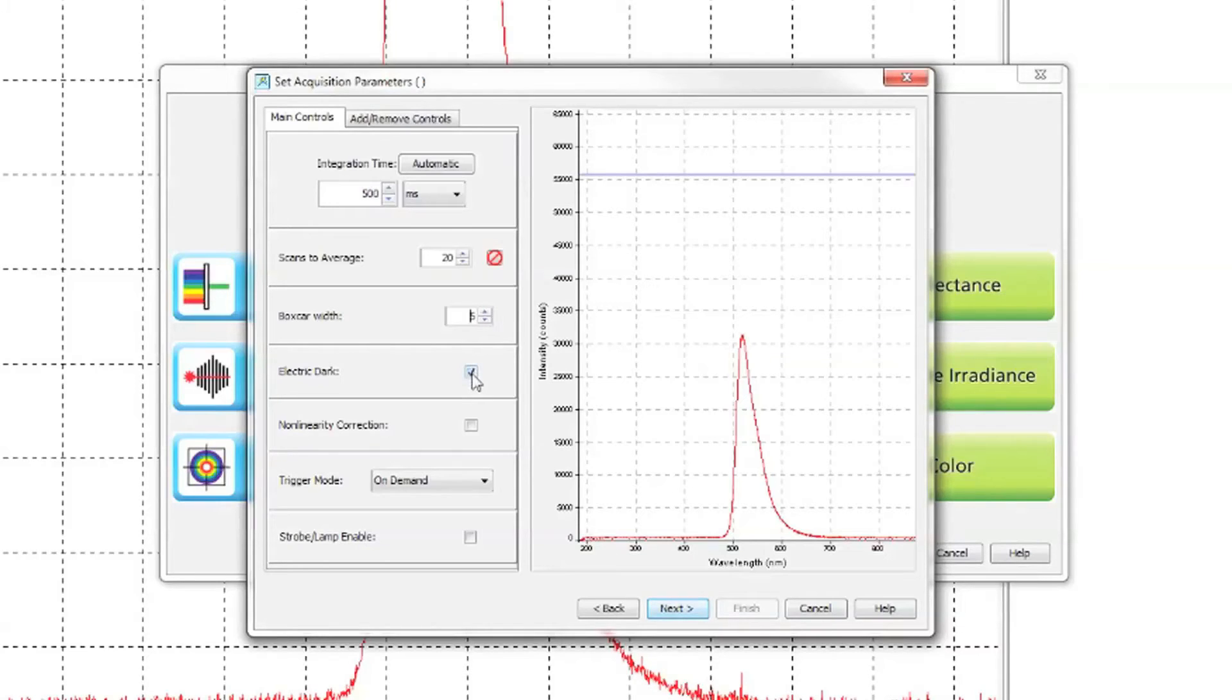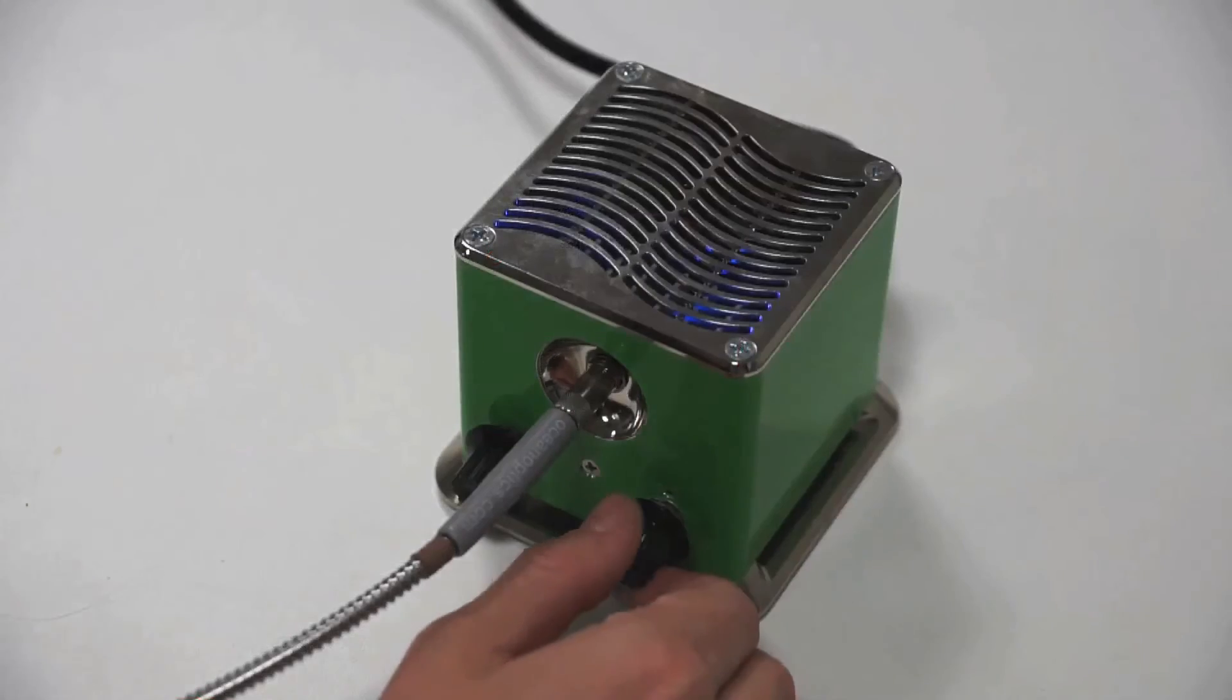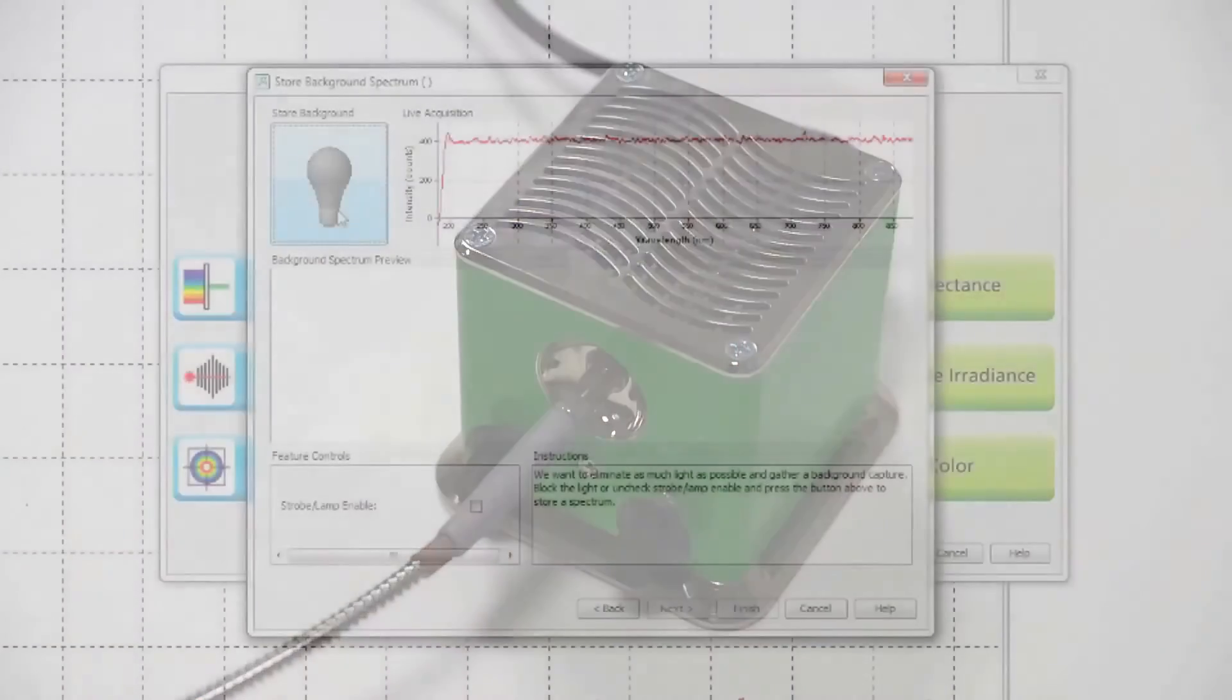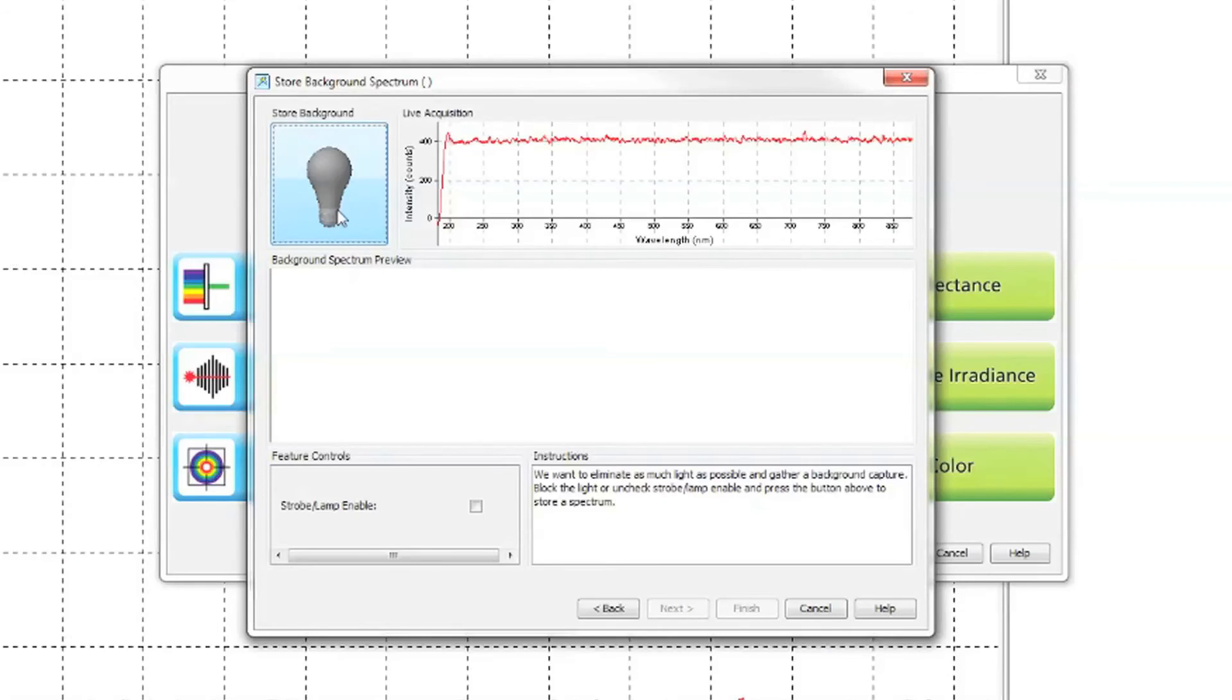Choose whether to select electric dark and non-linearity correction, both of which we recommend to select. Next, you will be asked to take a dark. Do this by closing the shutter or turning off your light source. Click the grey light bulb and then finish.